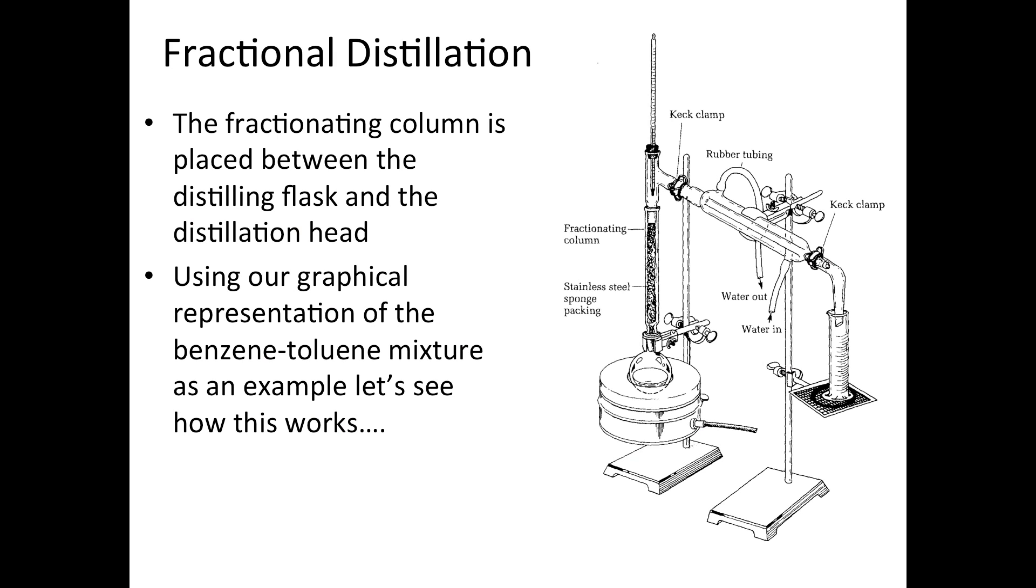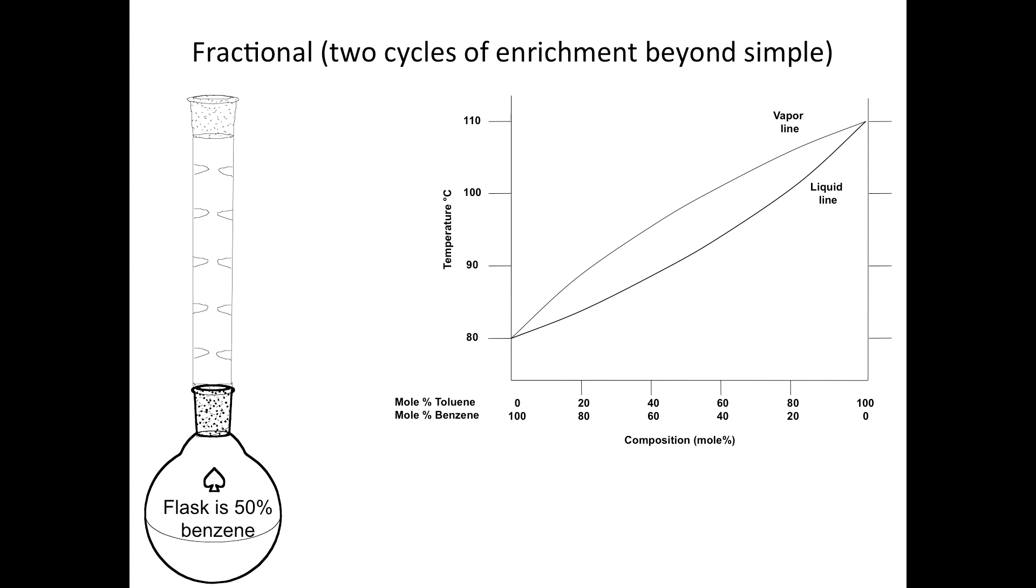In fractional distillation, operationally it's a lot like simple, except you put a fractionating column in between the boiling flask and the distillation head or the condenser. Let's use this graphical model to see what happens during a fractional distillation. Again in the flask is a one-to-one mixture of benzene. And as you've already seen, when that boils, it's going to produce a mixture of vapors that is 75% pure benzene. So this liquid boils, the vapors travel up, and there's 75% benzene.